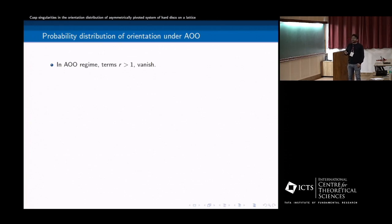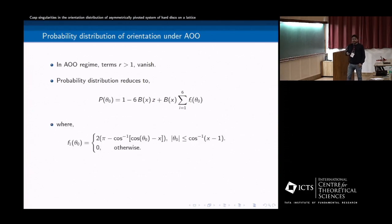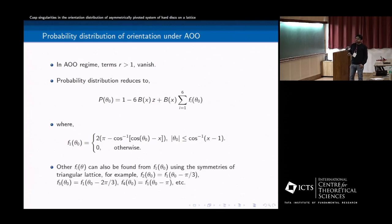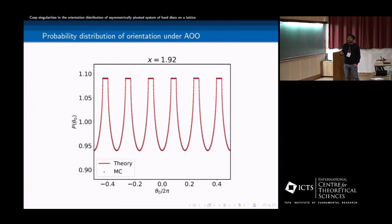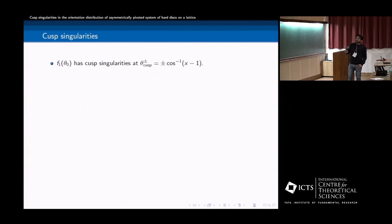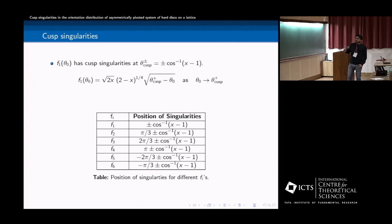In AO regime, all the terms greater than one vanish. And you can write again like this form. And Fi we know. Here also, this is given by this quantity. And other Fi's can also be found from F1, using symmetries of the triangular lattice. So here also you can, when there is AO condition, this is our theoretical prediction and the Monte Carlo simulation matches. And apart from that, you can see there is a cusp singularities here. And we can also theoretically say that this position is also known exactly. And there are several square root singularities. And the position of other singularities, so there are eleven, twelve of them. And the position is given by this. So we know exactly where are these.